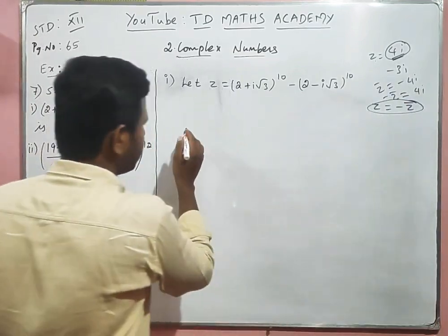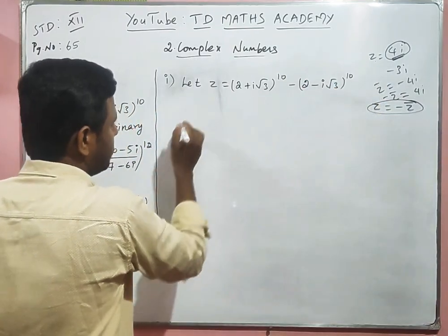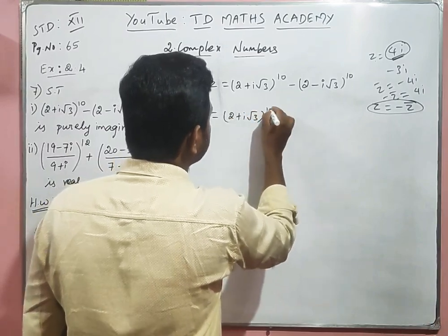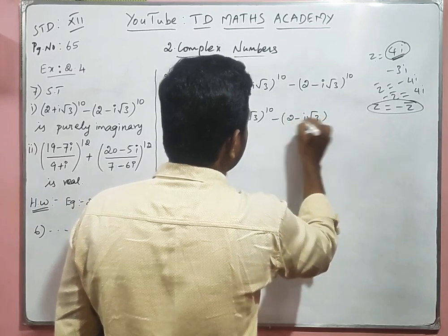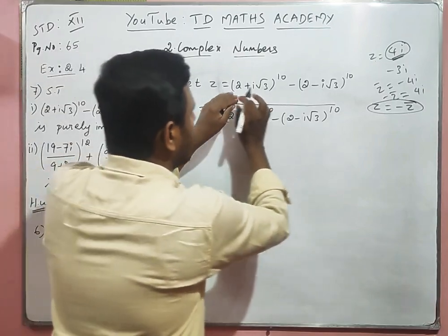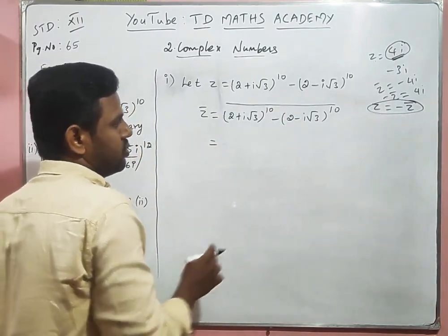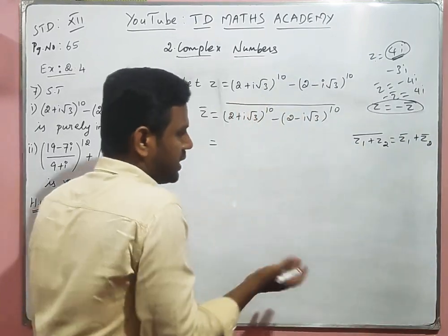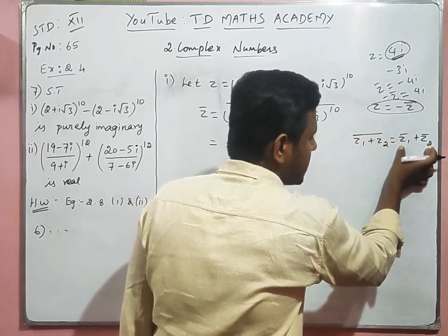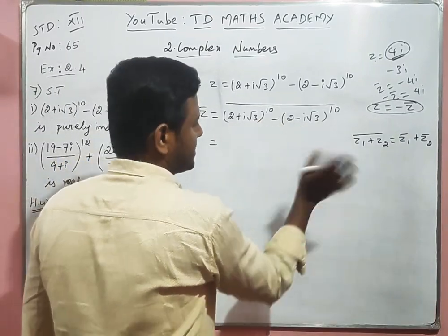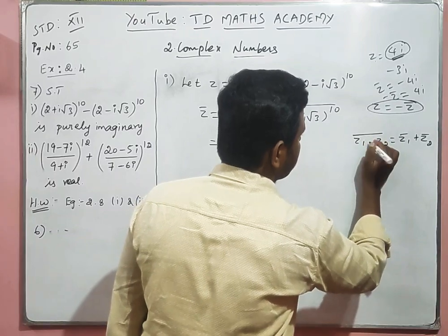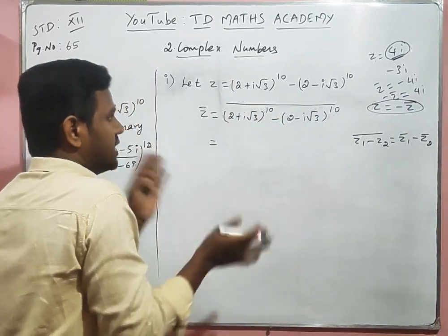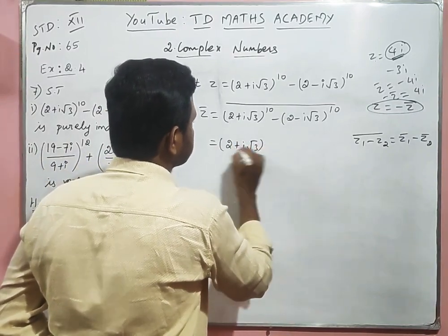So we need to find Z̄ first. Z̄ = the conjugate of [(2 + i√3)^10 − (2 − i√3)^10]. We apply the conjugate property: the conjugate of (z1 + z2) equals z1̄ + z2̄. Using the first property, we take the conjugate of each term separately.